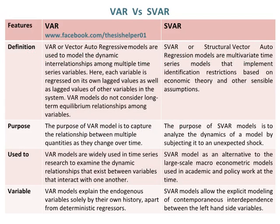Here, each variable is regressed on its own lagged values as well as lagged values of other variables in the system. VAR models do not consider long-term equilibrium relationships among variables. Whereas, SVAR, or structural vector auto-regression models, are multivariate time series models that implement identification restrictions based on economic theory and other sensible assumptions.